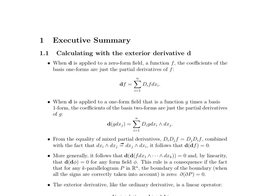More generally, it follows that if you're taking the exterior derivative twice of any form — not just a one-form, not just a k-form, but any form field φ — you're going to end up with zero. By linearity, the most succinct way to put this is that the exterior derivative of the exterior derivative of φ, for any form field, gives you zero.